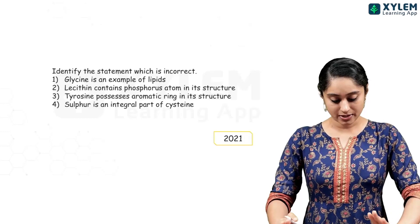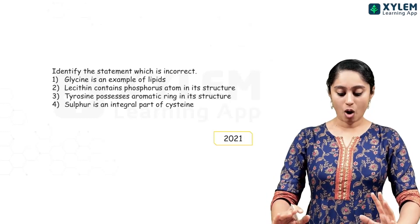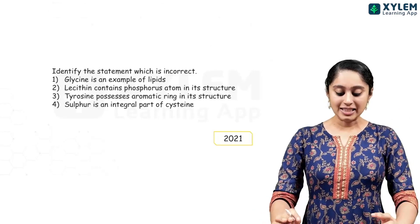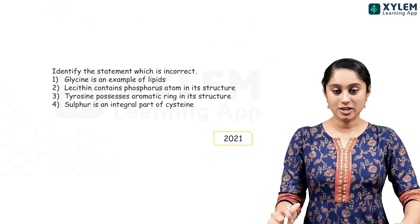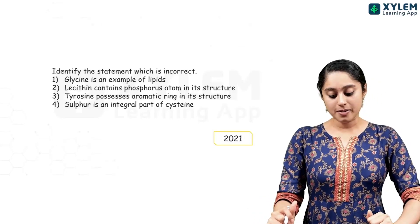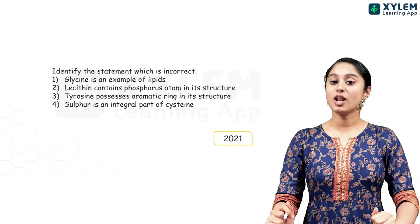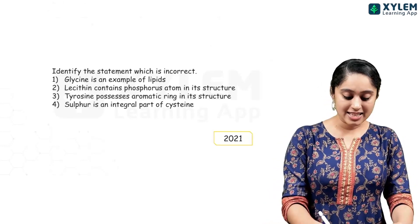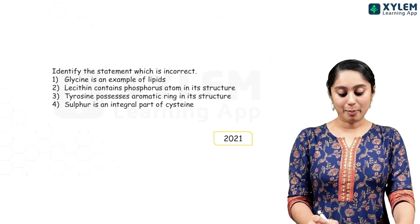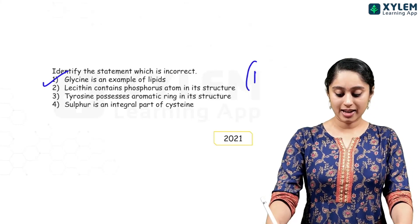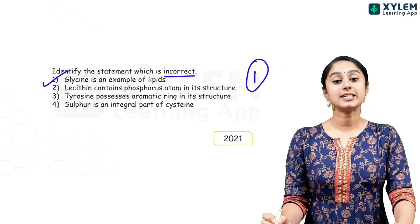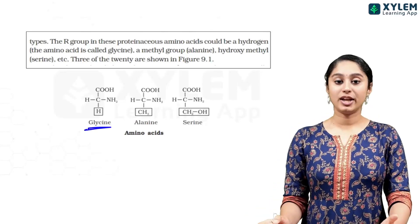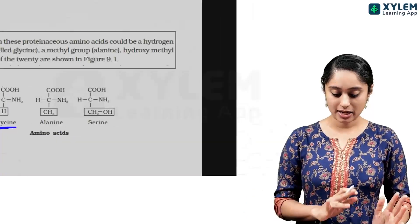Identify the statement which is incorrect. The statement says glycine is an example of lipids. But glycine is an amino acid, not a lipid — so that is clearly an incorrect statement. Option 1 is the incorrect statement.